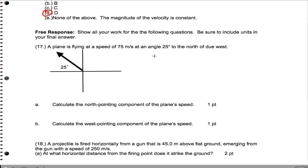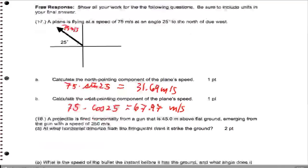We have a plane flying 75 meters per second at 25 degrees due north to west. We want to get the north and the west pointing component of the plane's speed. So the answer here is going to be 75 times the sine of 25 and 75 times the cosine of 25. We're going to end up getting 67.97 meters per second for the x component and 31.69 meters per second for the north or y component.